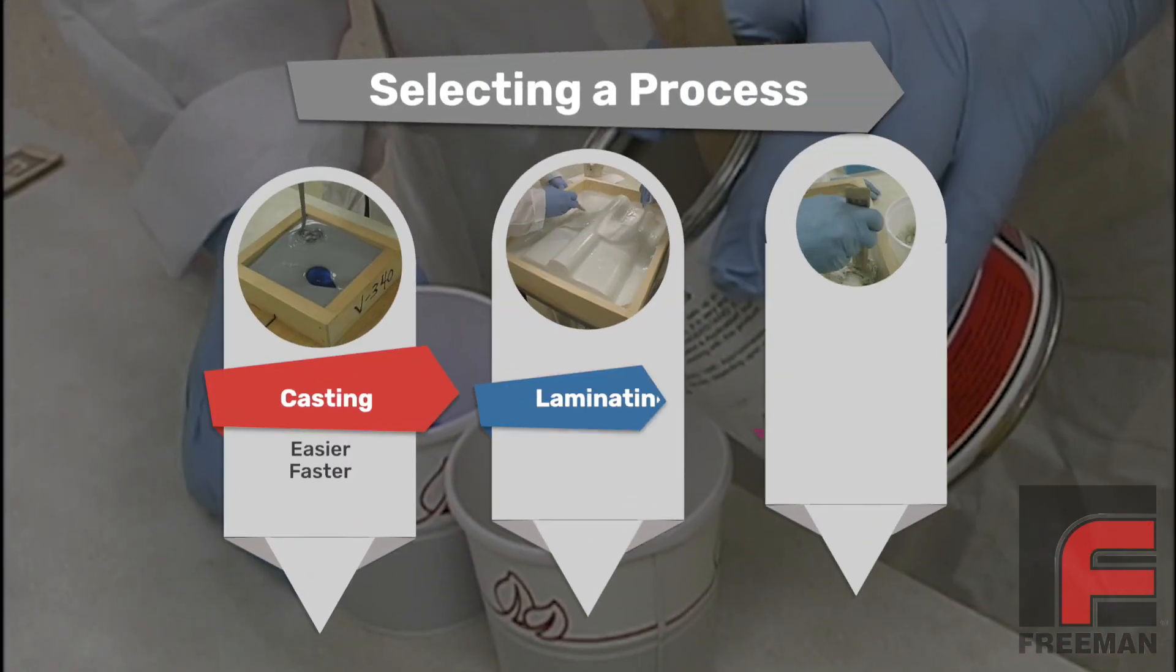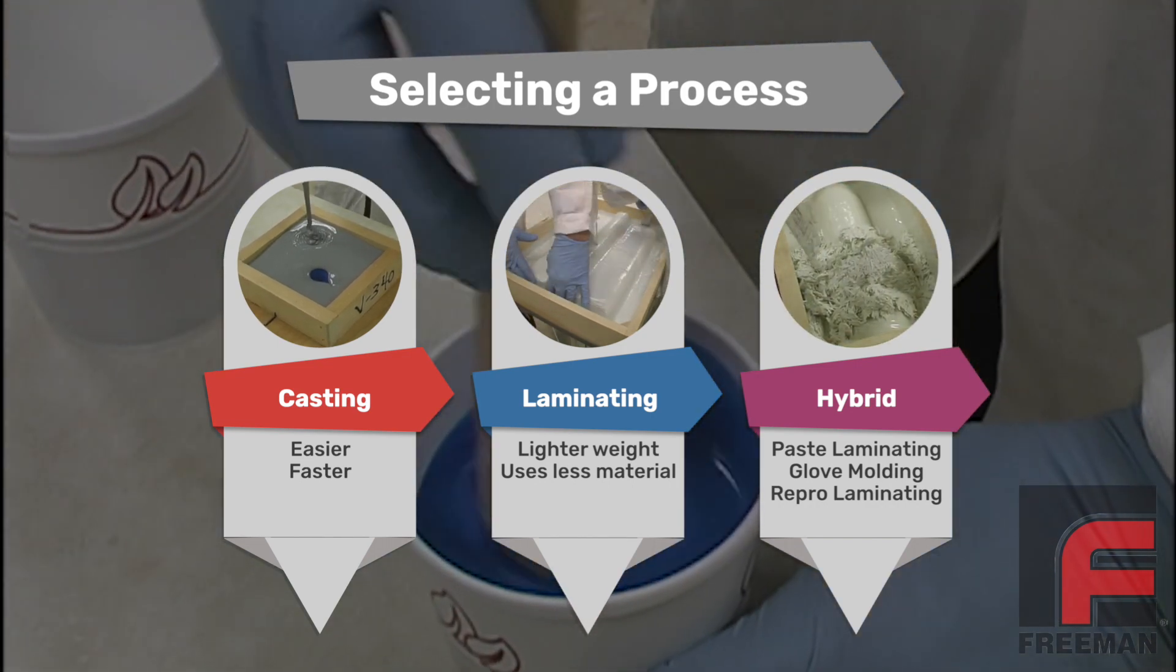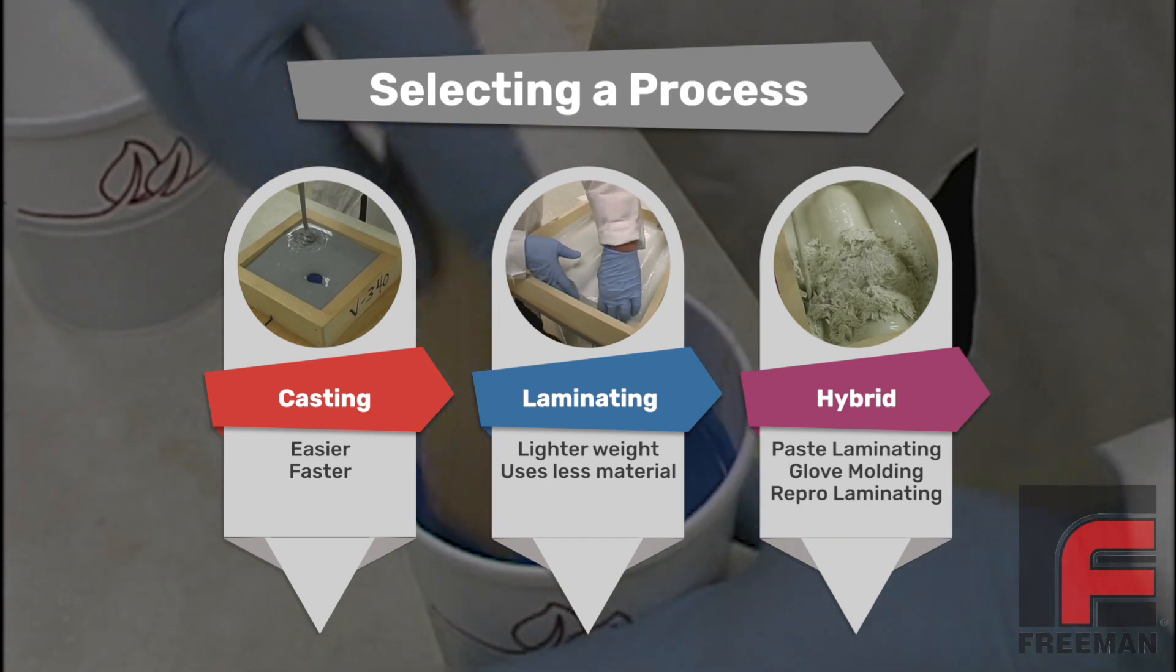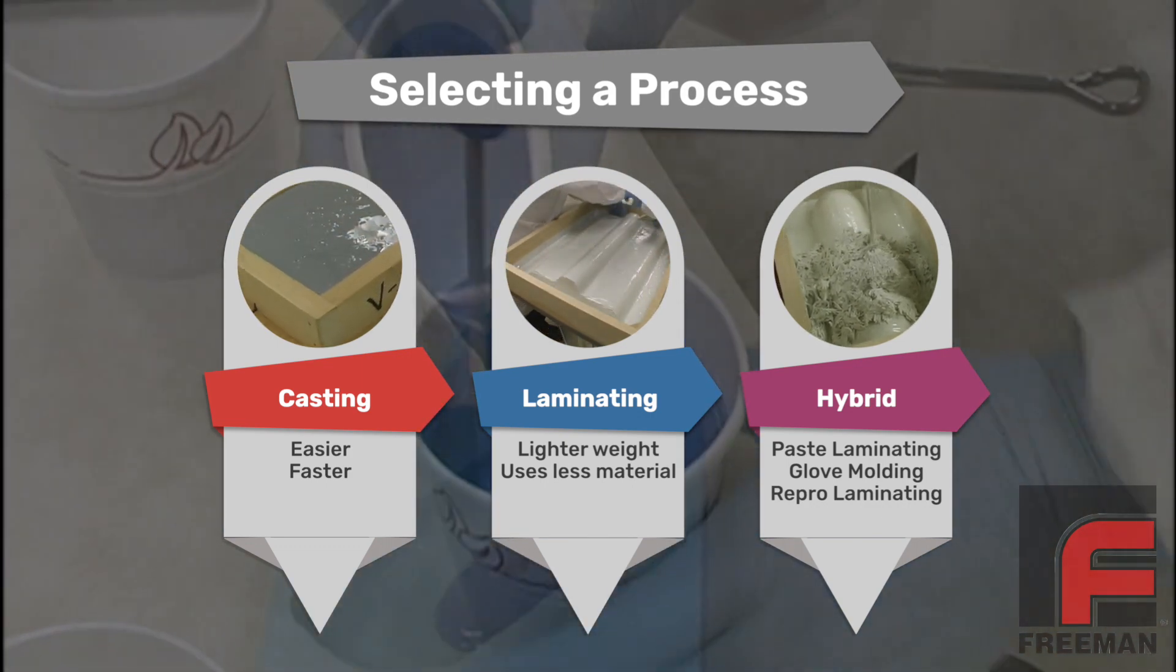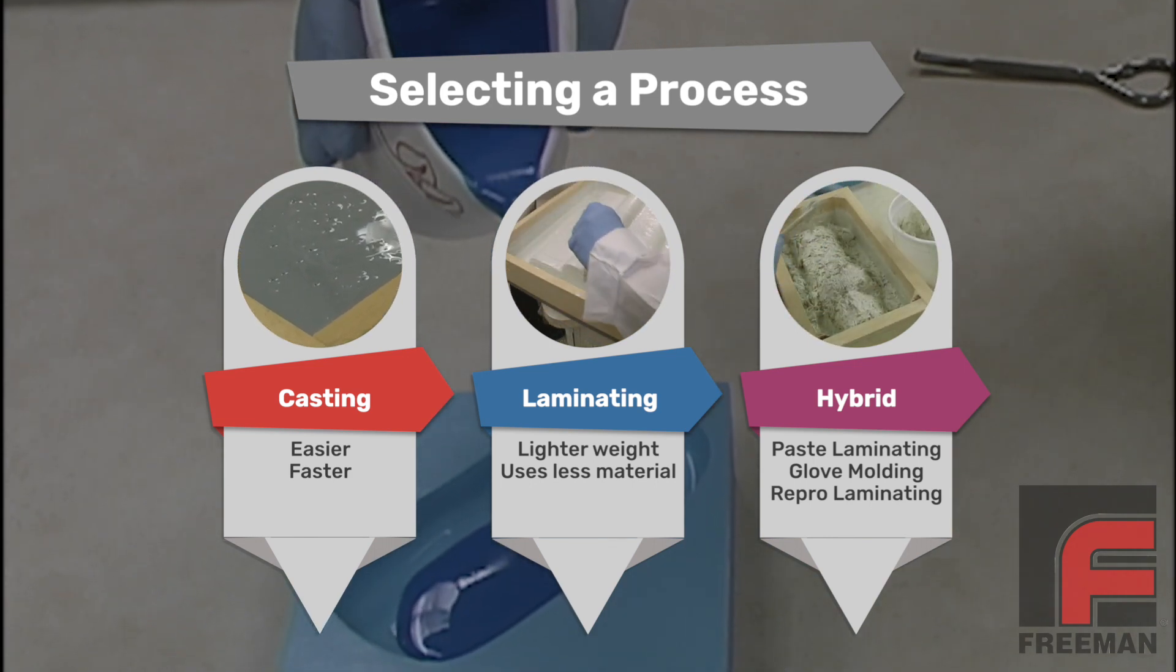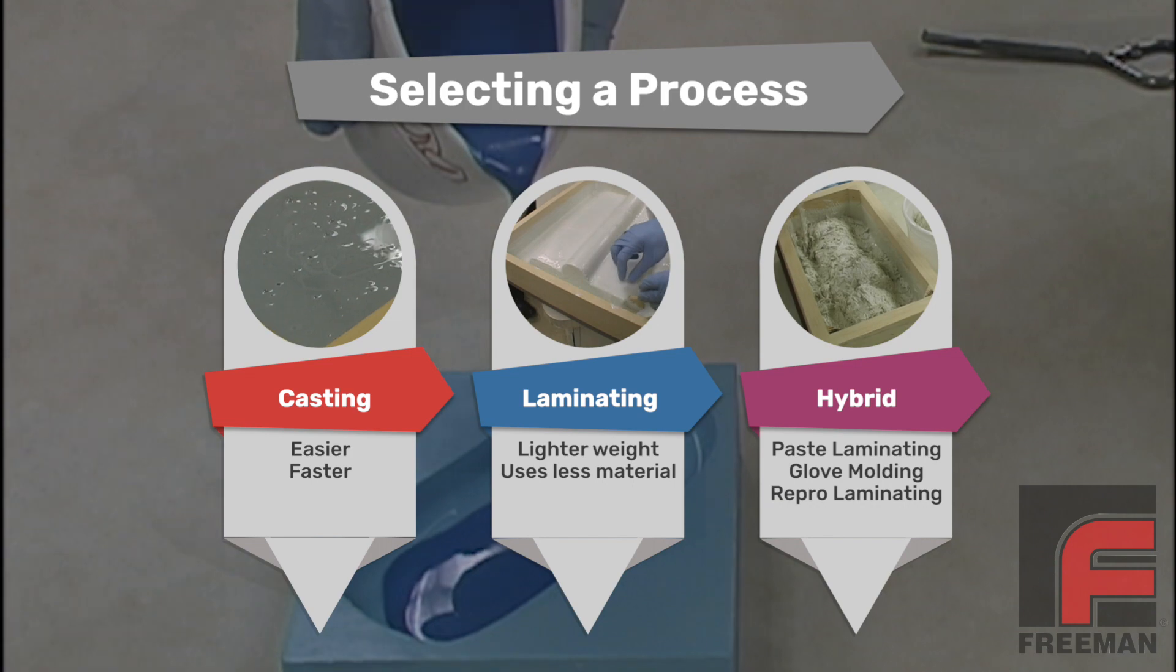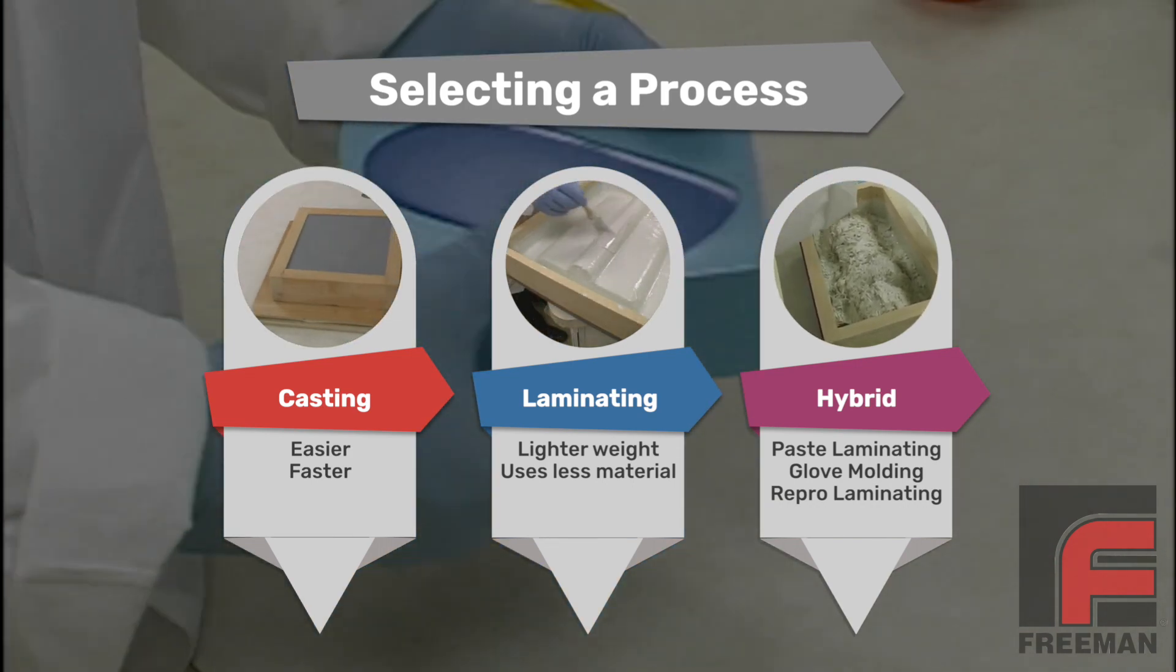Now let me stop here for a second and explain why we are casting instead of laminating. The first question we always ask when someone says they want to make a mold is what is the size of the model? For small models, we recommend mass casting because it is easier and faster. For large models, we recommend laminating in order to lower the overall weight and save on material cost. And for medium-sized models, there are some hybrid options to explore as well.